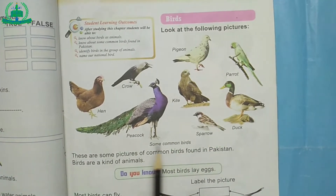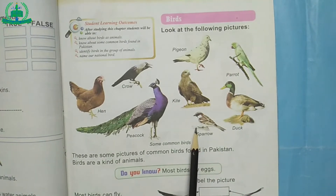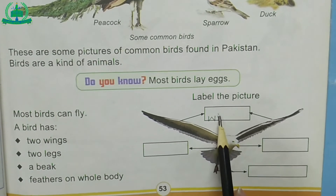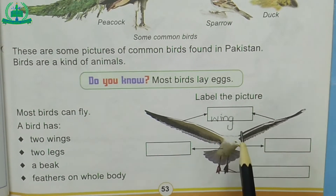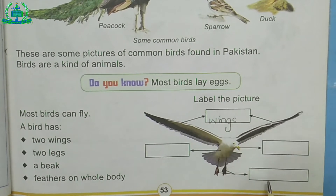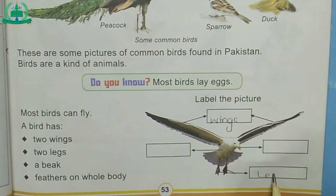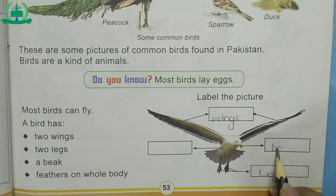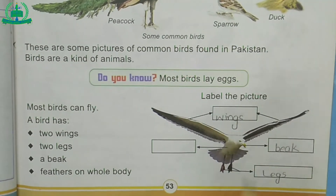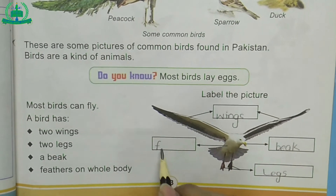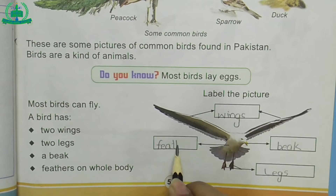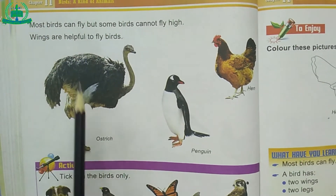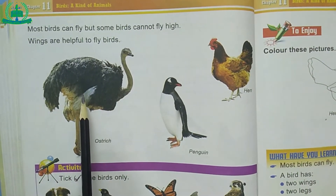Birds are a kind of animals. Most birds can fly. A bird has two wings, two legs, a beak, and feathers on the whole body. Most birds can fly, but some birds cannot fly high. Wings are helpful for birds to fly.